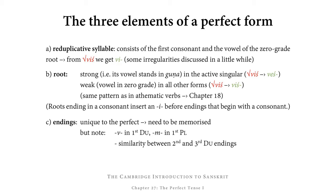Let's look at the three elements that make up a perfect verb form. First of all, there is the reduplicative syllable, which consists of the first consonant and the first vowel of the zero grade of a verbal root. For example, from viś 'to enter,' we take the first consonant v and the first vowel i, combine these to vi, giving us the reduplicative syllable. There are some irregularities in this process, which will be discussed shortly — but basically it's almost the same as the reduplication of class three verbs introduced in chapter 18.